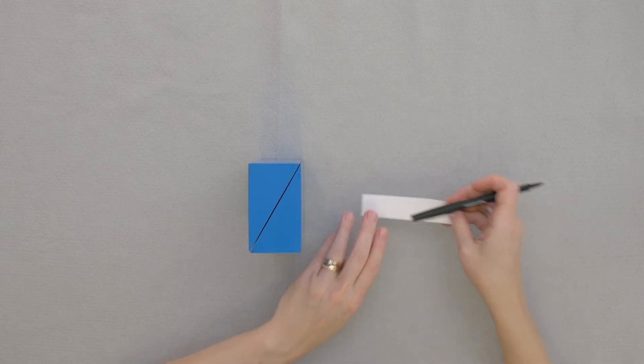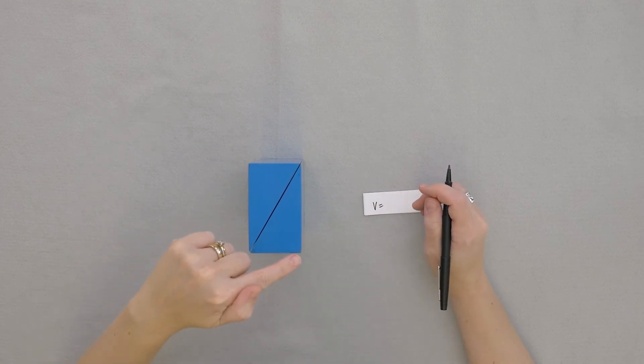So if we wanted to find the volume, we need to find the area of the base of this prism, and that means this base times this height.